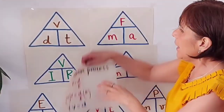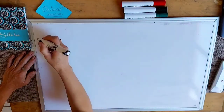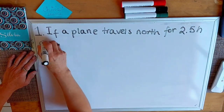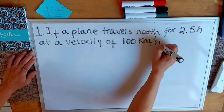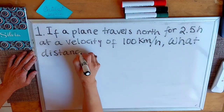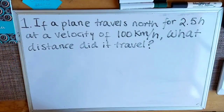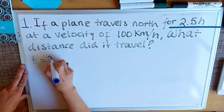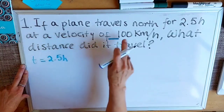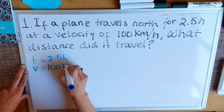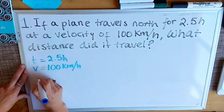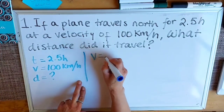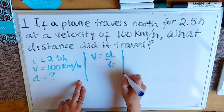Okay, let's get started with the first problem. If a plane travels north for 2.5 hours at a velocity of 100 kilometers per hour, what distance did it travel? First we are going to write the data: time equals 2.5 hours, velocity equals 100 kilometers per hour, and distance equals question mark. Now we are going to write the formula: velocity equals distance over time, and we need to obtain distance.